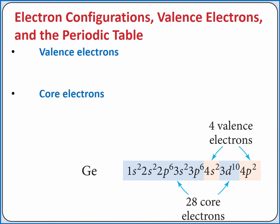In an electron configuration, valence electrons are all electrons in the outermost shell and in any partially filled d or f subshells.